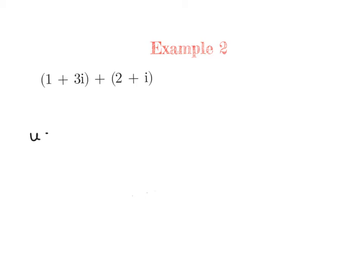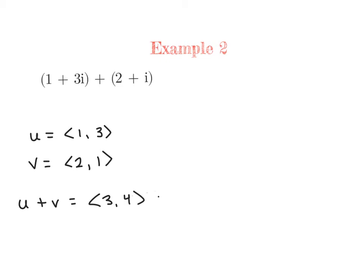So 1 plus 3i could be represented by the vector (1, 3), and 2 plus i could be represented by the vector (2, 1). We would add up those two vectors, which we have done before. So 1 plus 2 is 3, and 3 plus 1 is 4, giving us the complex number 3 plus 4i.